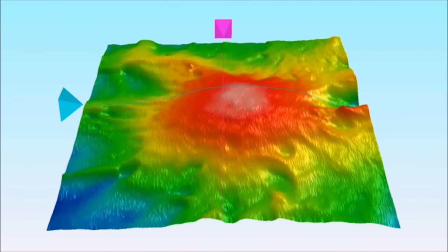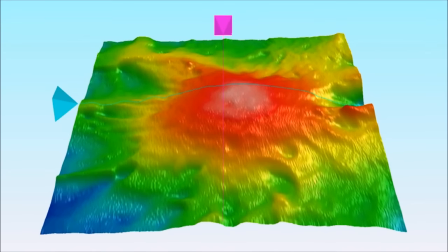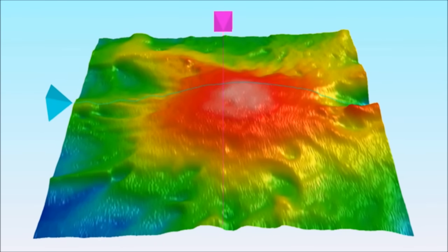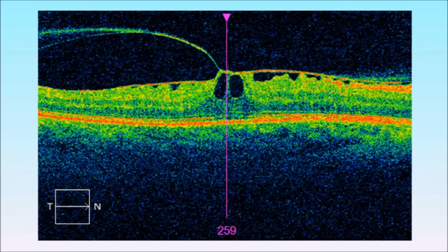This patient shown in the next two images has developed an epiretinal membrane on the retinal surface. As the membrane contracts it causes distortion and cysts of fluid to form. This requires urgent surgical intervention.